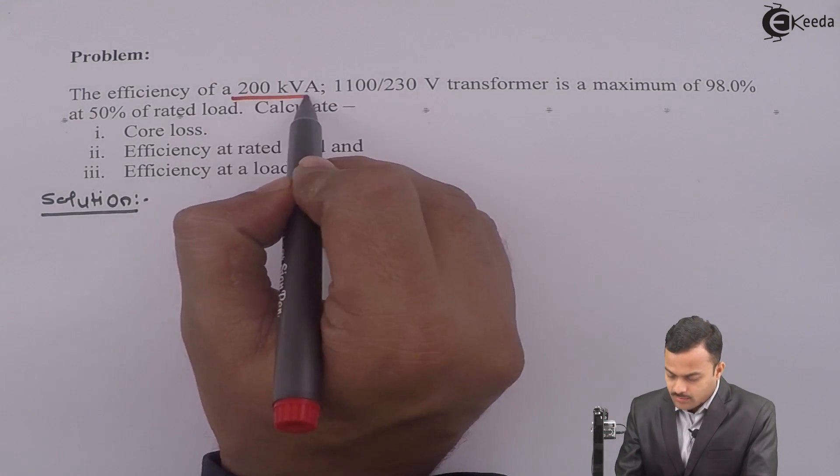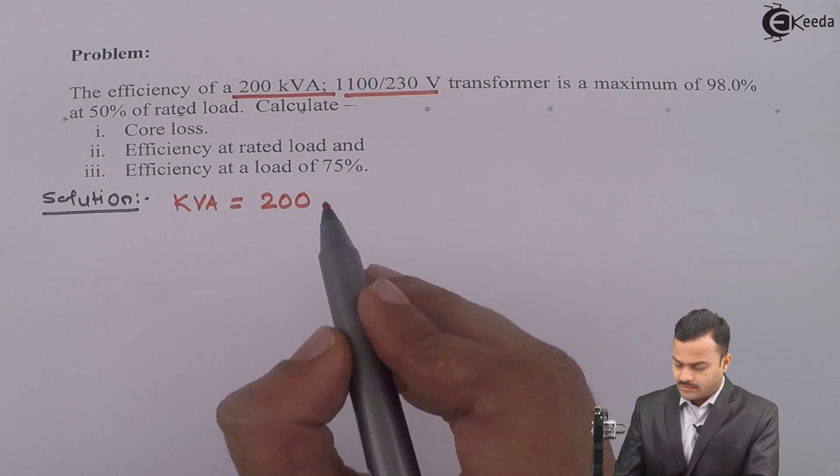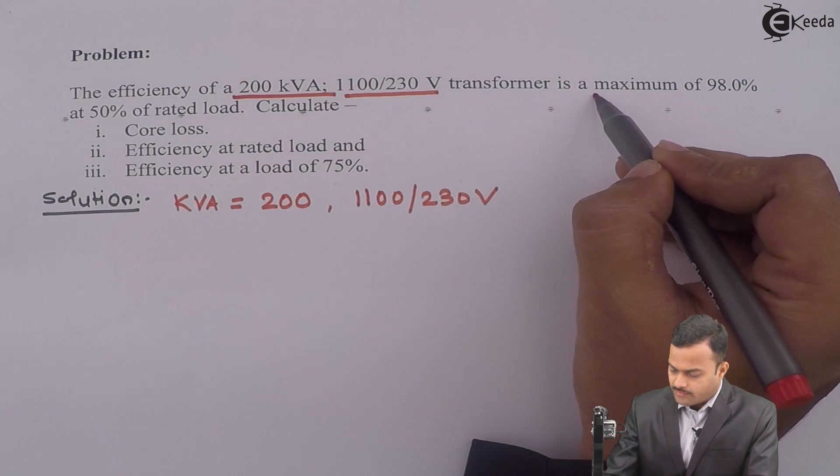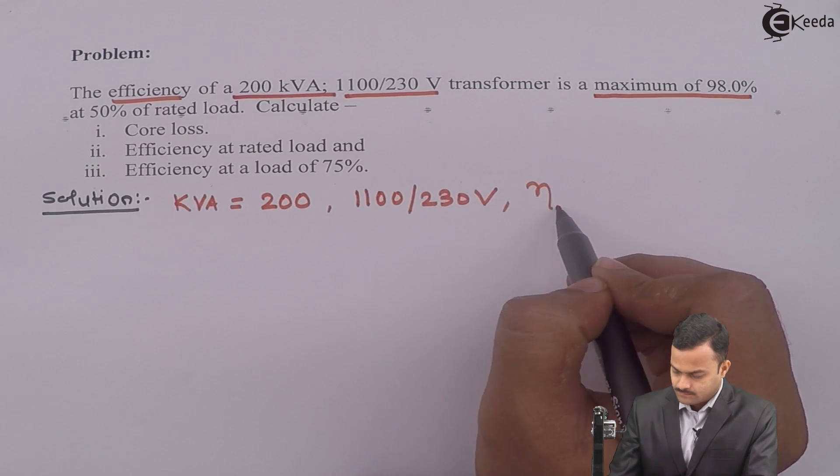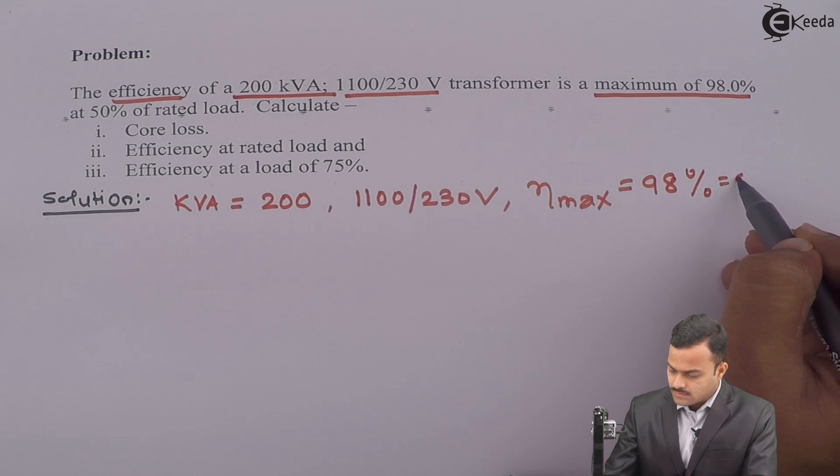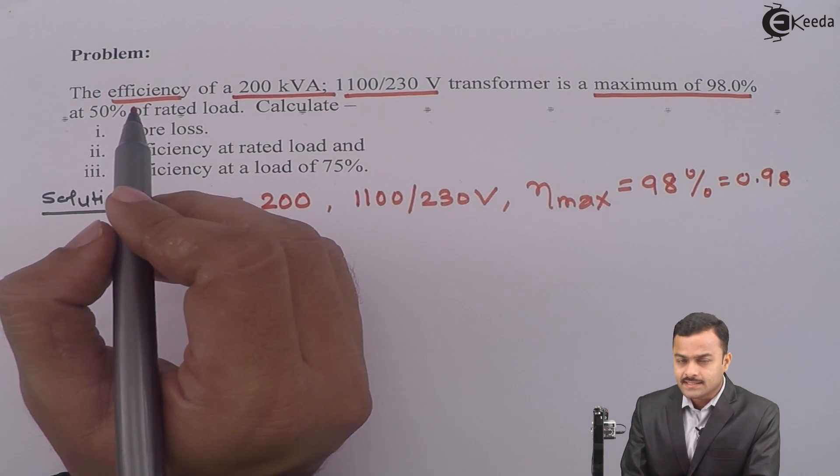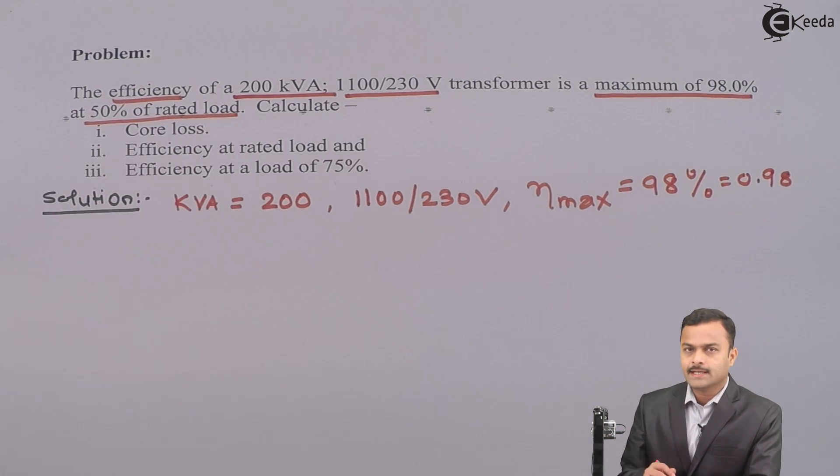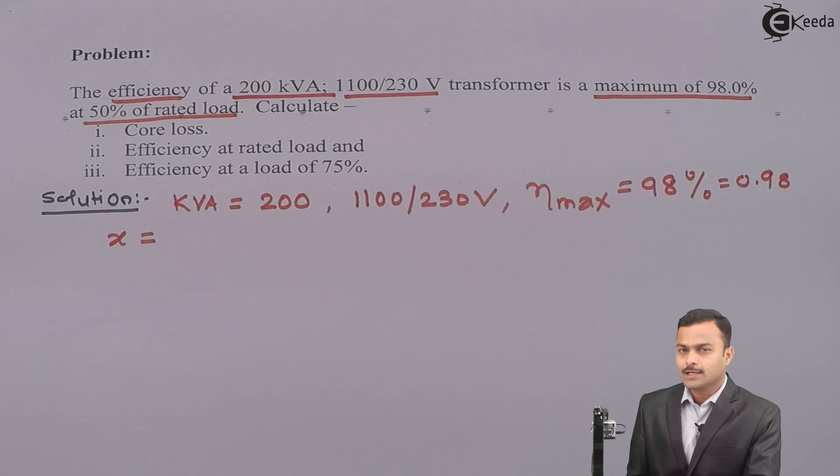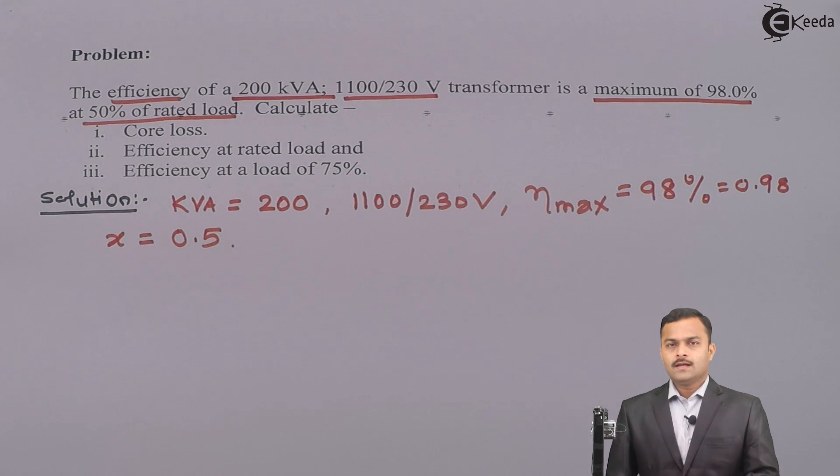What they have given? Transformer kVA is given 200. EMF ratio is given 1100/230 volt and very important part that is maximum efficiency is 98%, so 0.98, and most importantly that efficiency is occurring at 50% of the rated load. They have given value of X fraction of rated load and that is 50%, so 0.5. So these are the things given.